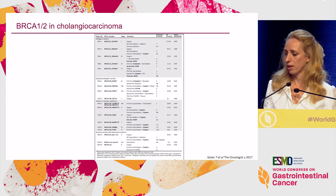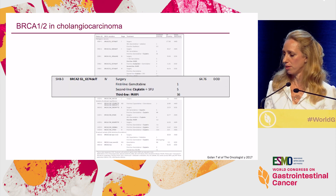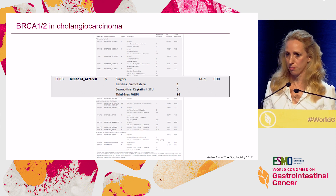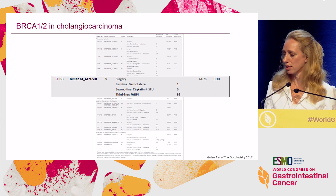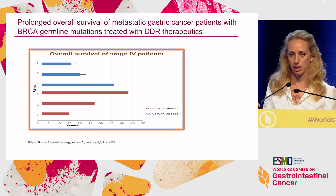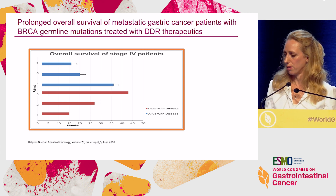We are seeing BRCA germline and somatic mutations in cholangiocarcinoma as well, with prolonged overall survival in some patients when treated with similar strategies as in pancreatic cancer. We're also seeing similar signals in gastric cancer. However, these are very small cohorts and need to be validated in larger studies.